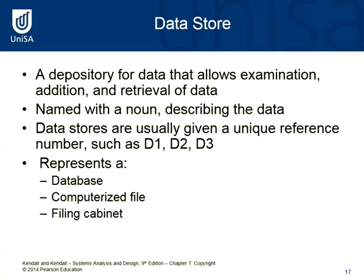A data store is a repository of information — where the information sits — and you name it with a noun describing the actual data, so it makes sense to both users and designers. Data stores are usually given a unique reference number such as D1, D2, D3. Some use this convention, some don't, but it's a good way of providing consistency so you know which data store you're referring to at a particular point in time.